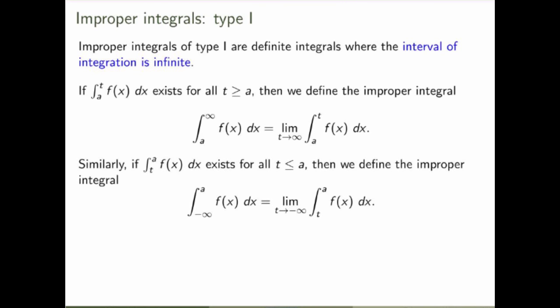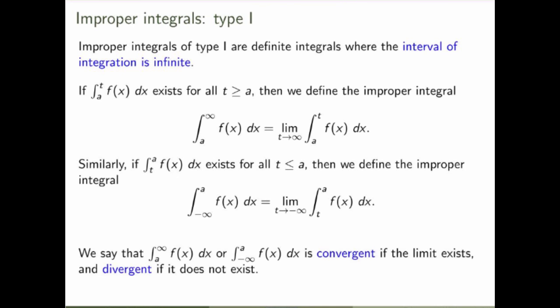So how do we define that mathematically? If you have an integral which exists for all t greater or equal to a, you define the improper integral as being the limit as t goes to infinity of this definite integral — you let the upper limit of integration run to infinity. You can do the same thing for the lower limit, letting it go to minus infinity. Since a limit is involved, this may not exist. So we say that improper integrals are convergent if the limit exists and is a finite number, and divergent if it does not exist or is infinite.